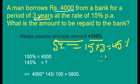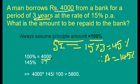They are asked what is the amount to be repaid to the bank. We know 100% equals 4000 rupees, and the total amount is 100% + 45% = 145%. So we calculate 145% of 4000. By cross multiplying, we get 5800 rupees as the total amount to be repaid.